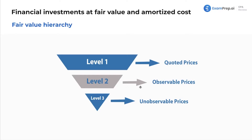Level two is where you have similar observable prices. So if I have a house, I can't immediately know the price of my house — even the Zillow price isn't really accurate. But if my neighbor's house just sold for $200,000 and I have the same house, then I could probably say my house is worth $200,000. So that's observing a similar asset.